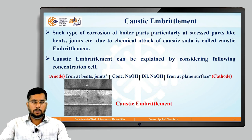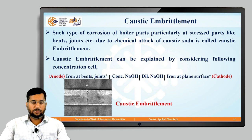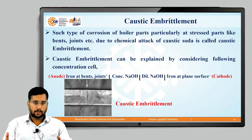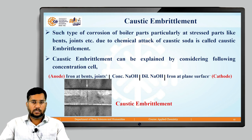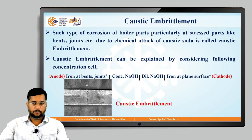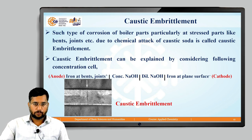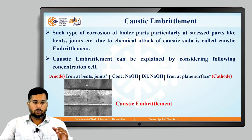Caustic embrittlement can be explained by a concentration cell. At bends and joints where flow rate is low, NaOH accumulates and the iron in contact with concentrated NaOH acts as the anode. The remaining iron parts, where flow rate is high and NaOH is diluted, act as the cathode. This galvanic action causes cracks to form in the boiler material, as shown in the diagram.